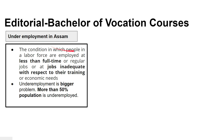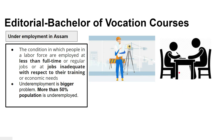Underemployment is a condition where people in the labour force are employed but less than full time, or in jobs inadequate with respect to their training or economic needs. Unemployment is a problem, but underemployment is an even bigger problem. Underemployment means where people cannot get a full-time job, or cannot get a job matching their qualification. For example, someone who has an engineering degree but is only doing private tuition — that is called underemployment. According to the Periodic Labour Force Survey, more than fifty percent of the population are underemployed.